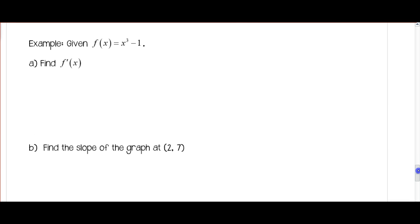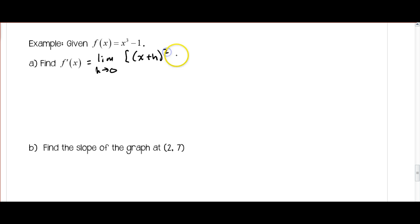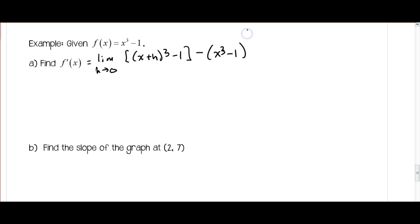Let's take a look at another example with a couple of different parts. For the first part, we want to find f prime of x. So I've got the limit as h approaches 0 of x plus h cubed minus 1, minus f of x, which is x cubed minus 1, all divided by h.